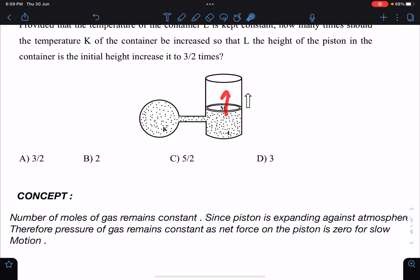And volume becomes 3V₀ by 2. So let's say its temperature we are making it as K, so K times we are increasing it. And it is given that since the piston is expanding against atmosphere, you can say slowly if it is expanding here.